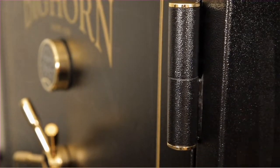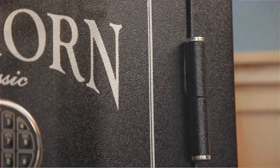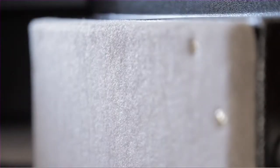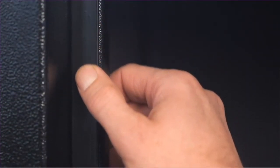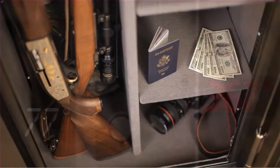Heavy duty external hinges allow for full opening of the door giving you twice the accessibility of internal hinges. The thick door and body, fire protective lining, and heat activated door seal protect your valuables against house fires.